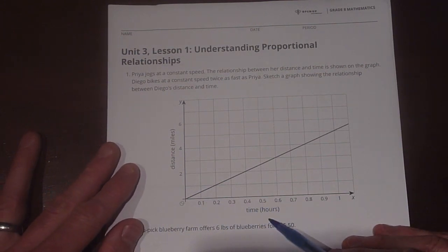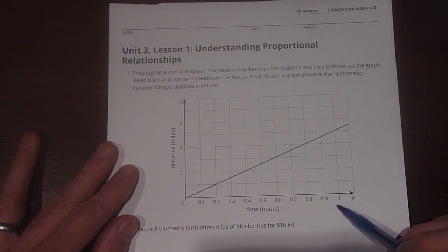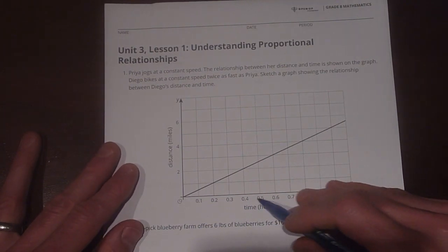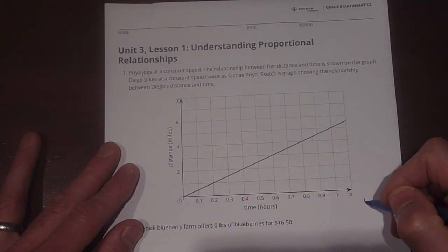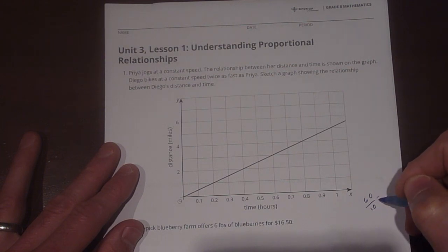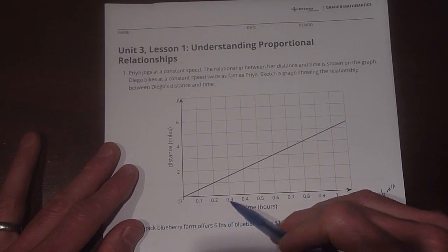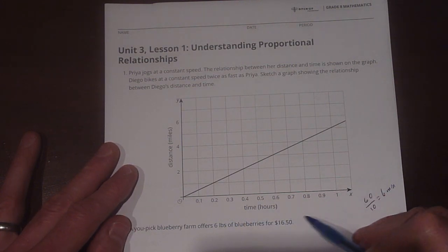So it's time in hours, and an hour is 60 minutes, and these are in tenths. So if we take 60 and divide it by 10, that gives us 6 minutes per every tenth. So this is 6 minutes, 12, 18, and so on, all the way up to 60.